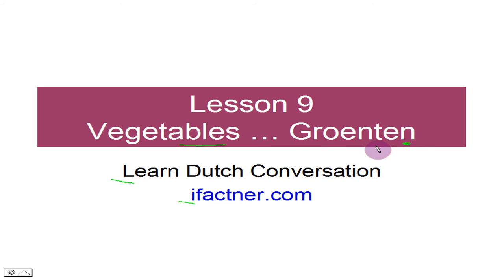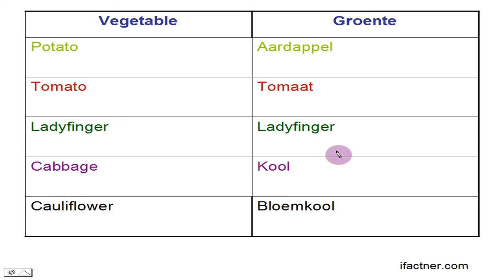The N is not fully silent at the end — it's very soft. Groenten. Let's start our lesson. Vegetable is called groenten.